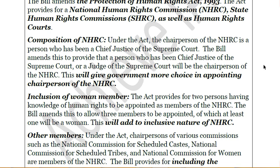The bill also includes inclusion of a woman member. The 1993 Act provided that two persons having special knowledge or experience in human rights matters had to be appointed to the NHRC as members. Now the bill proposes that the number of such members is increased to three, and at least one must be a woman. This adds to the inclusive nature of the National Human Rights Commission.